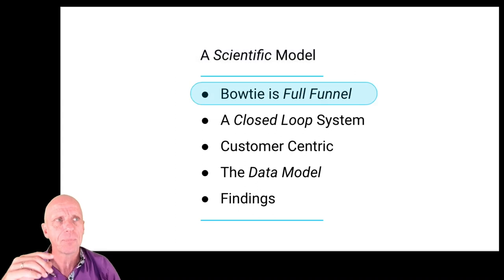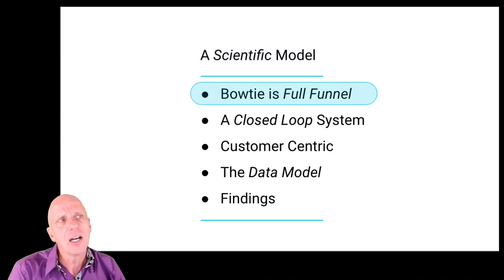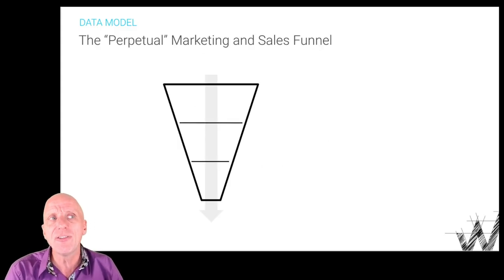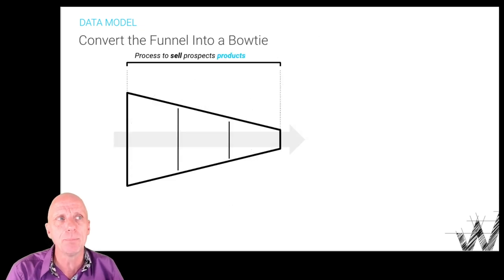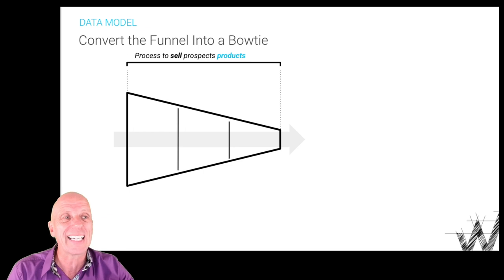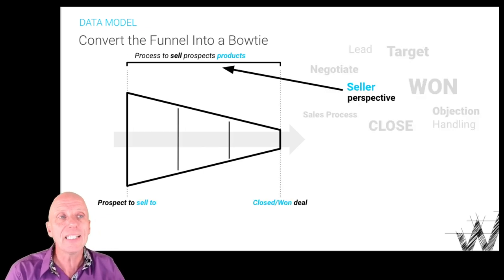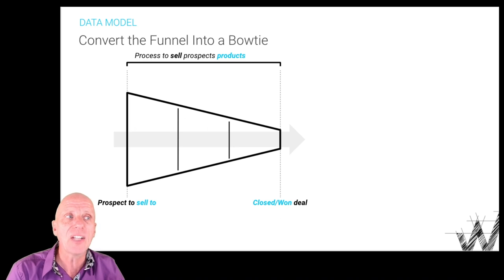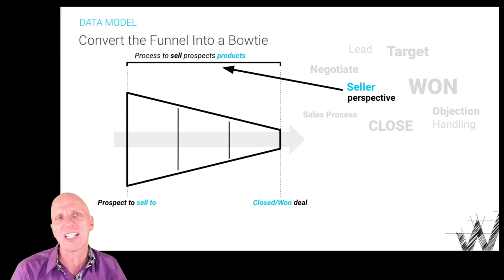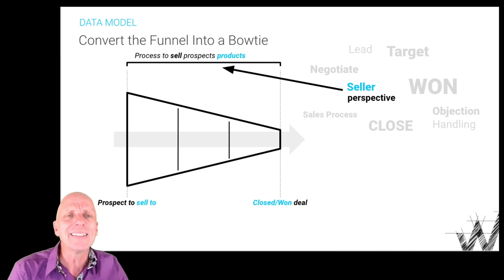Historically the bowtie completes a full funnel. If I take this single funnel and tip it on its side, we see that process historically exists to sell products to customers — think of routers, equipment, and so on. On the left we have prospects coming in and closed-won deals on the right. In order to close them, we have a very seller-centric perspective: negotiating, targeting, winning, objection handling, selling — as if we are focused on closing the deal and being done with them.